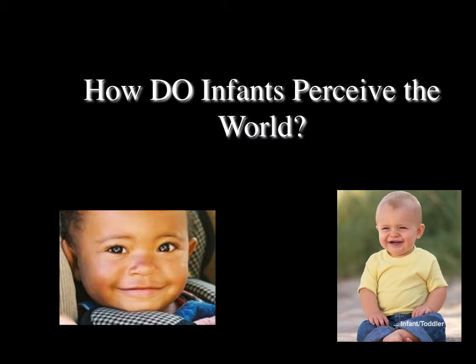How exactly do infants perceive the world? One very important concept is intermodal perception — newborn infants do not use just one sense exclusively, but they expect sight, sound, and touch to go together from the very beginning of life. In the next few slides, we'll talk about perceptual constancy and depth perception before moving on to the last part, which is where we discuss infants perceiving social signals and emotional expressions.